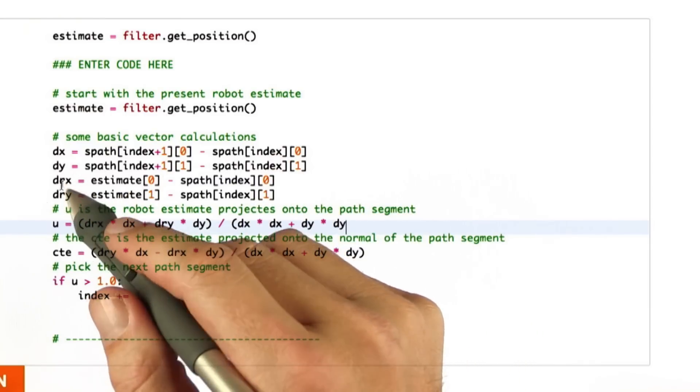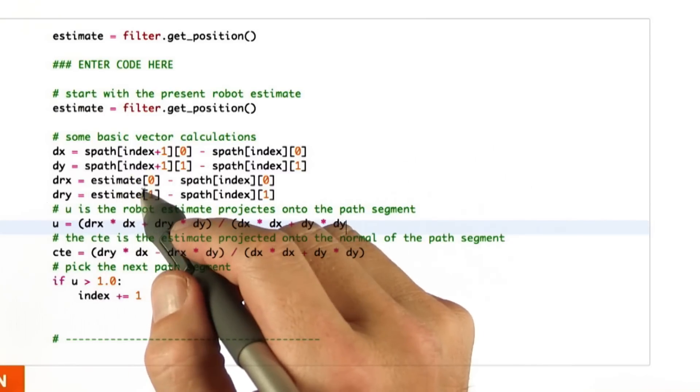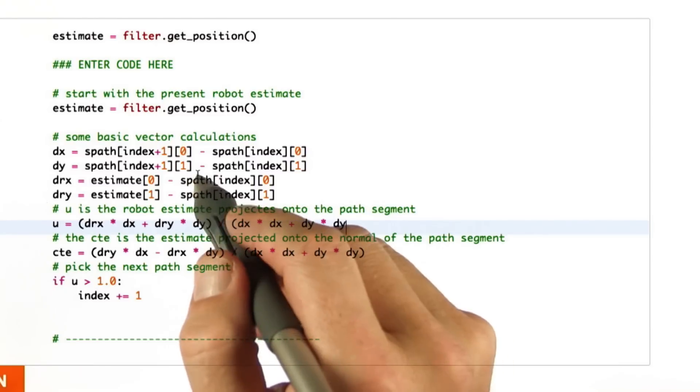My rx and ry, called the drx and dry over here, are the robot estimates as obtained by the filter minus the path.